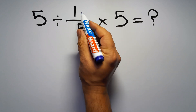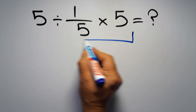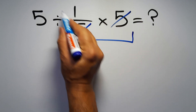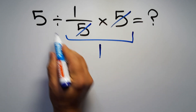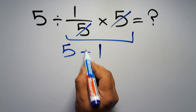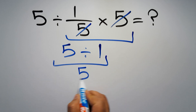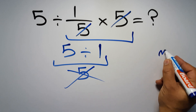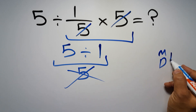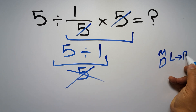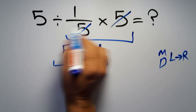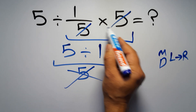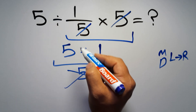First we do this multiplication: 1 over 5 times 5. We can easily cancel this 5 and this 5, so here we have just 1, and 5 divided by 1 equals 5. But this answer is not correct, because according to the order of operations, multiplication and division have equal priority and we have to work from left to right. So here, first we have to do this division, then this multiplication. If we do this multiplication before this division, it is wrong.